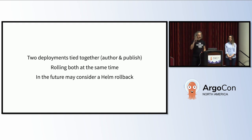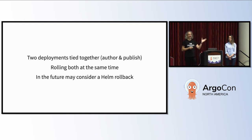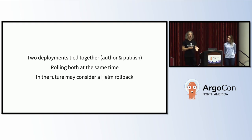In each environment we run, we have two deployments which we call author and publish, and we tie them together. In an ideal world with microservices they wouldn't need to depend on each other, but we're not always in an ideal world. We wanted these two deployments tied together — if one is rolled back, we roll back both. You can do this with Argo Rollouts by combining metrics for both deployments. In the future, we are considering whether we want to do a full Helm rollback instead of just watching the rollout object, and when Argo says it needs to roll back, we could look at that event and trigger a full Helm rollback.